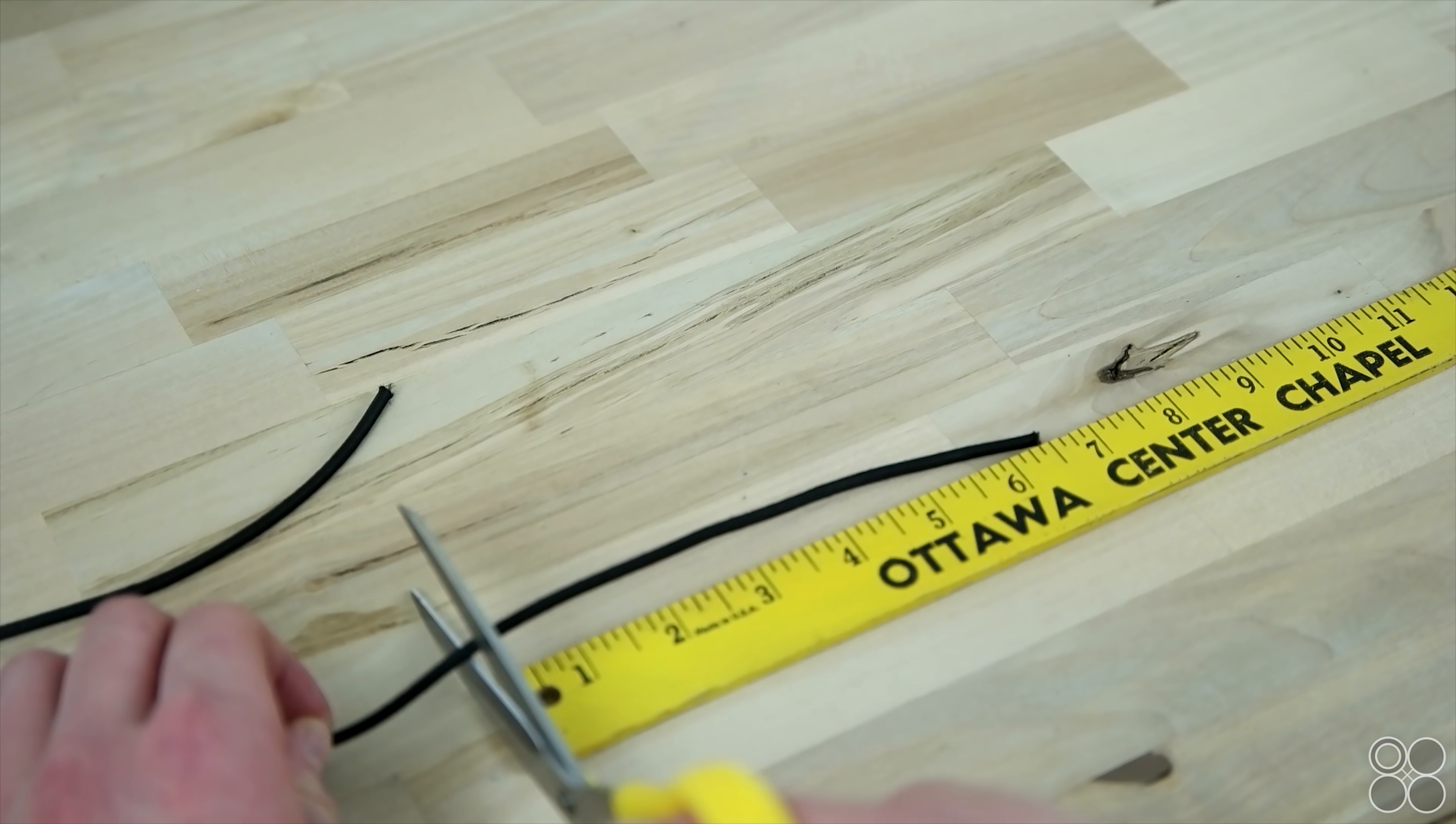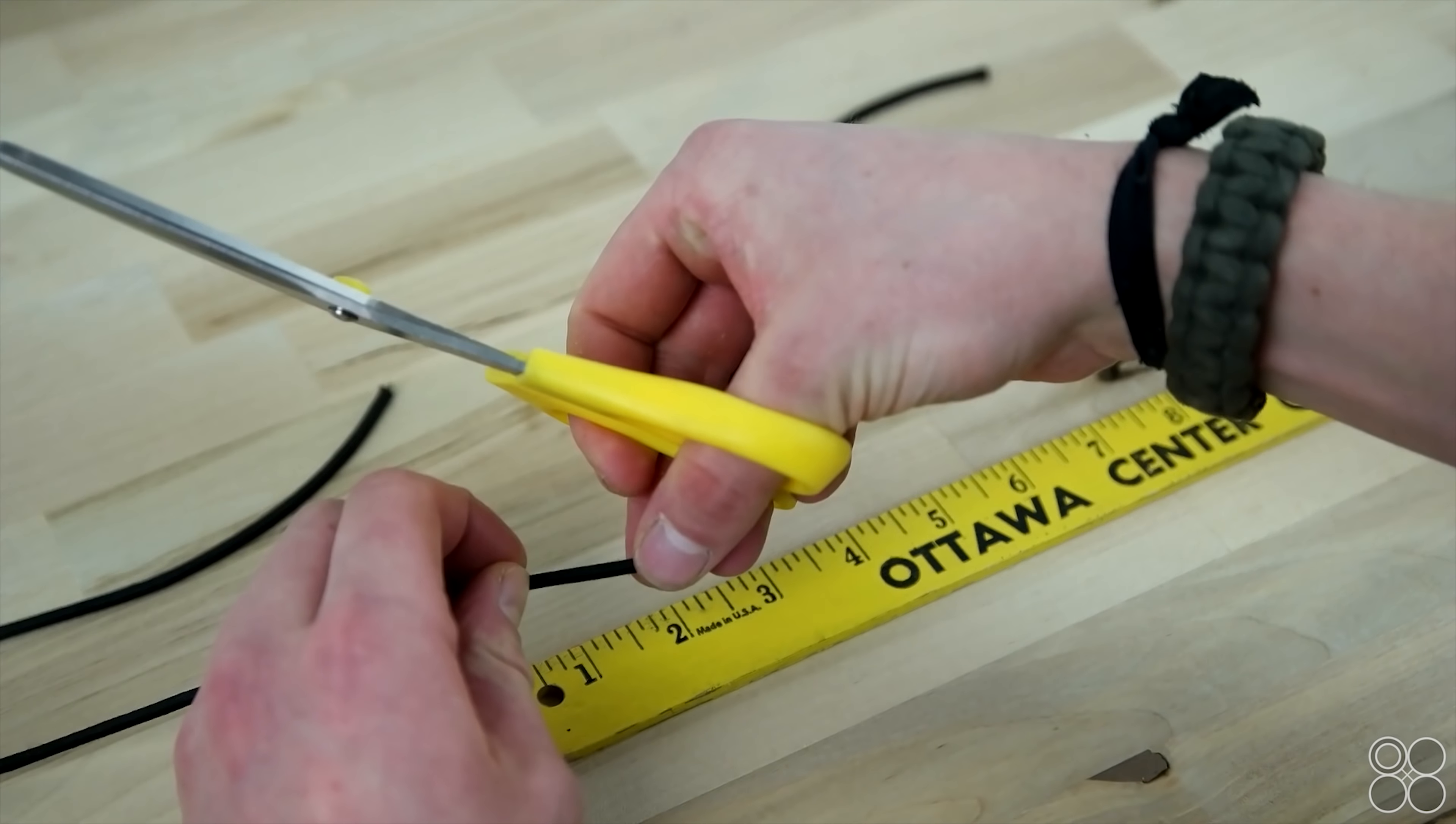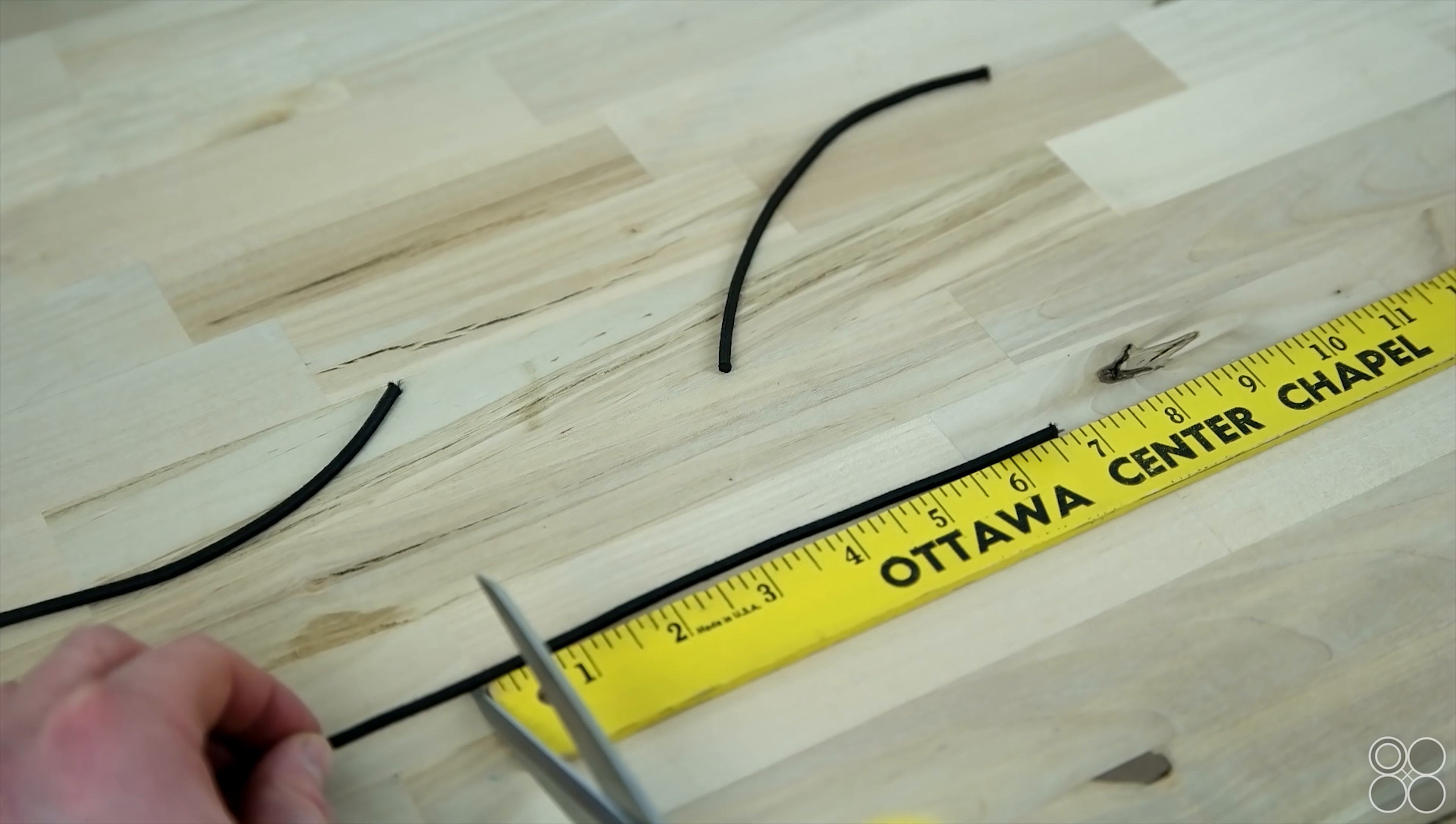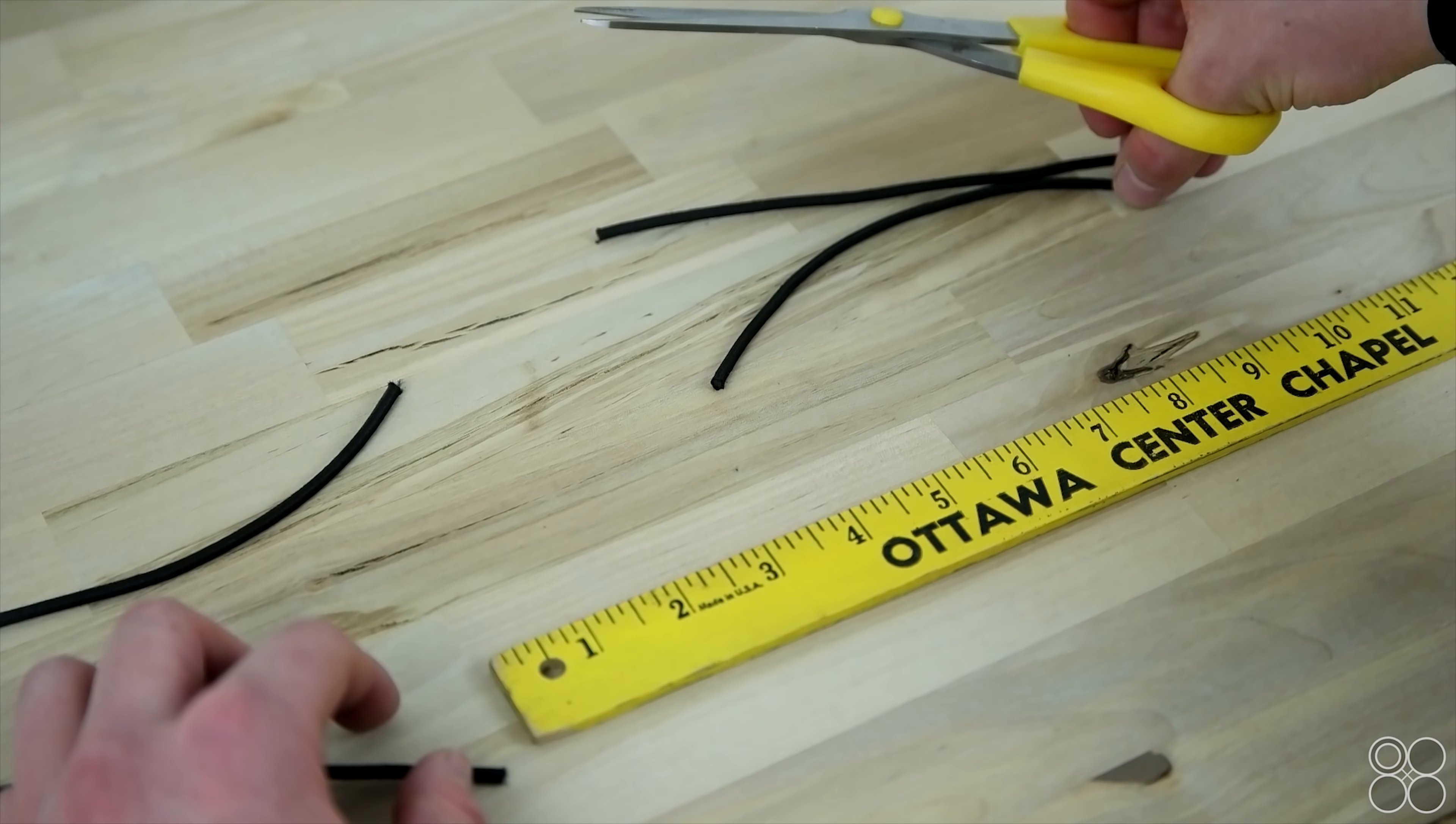So go ahead and grab your elastic cord and cut it at about six and a half inches. Be careful what cord you use because if your cord is not stretchy enough it will pull your ears forward. So just be on the lookout for that.